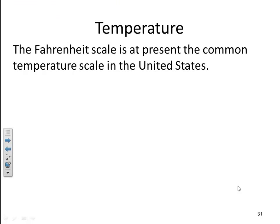The Fahrenheit scale is, at the present, the common temperature scale in the United States. We say that freezing point of water is 32 degrees Fahrenheit, and the boiling point is 212 degrees Fahrenheit. This difference is important as we talk about the ratio between Celsius and Fahrenheit scale.